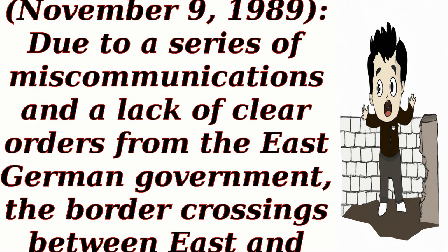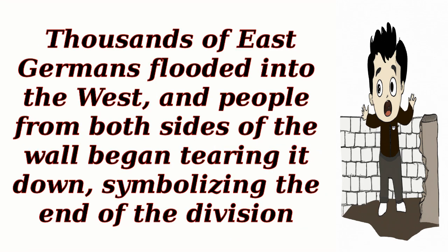Opening of the Berlin Wall, November 9, 1989: Due to a series of miscommunications and a lack of clear orders from the East German government, the border crossings between East and West Berlin were opened. Thousands of East Germans flooded into the West, and people from both sides of the wall began tearing it down, symbolizing the end of the division.